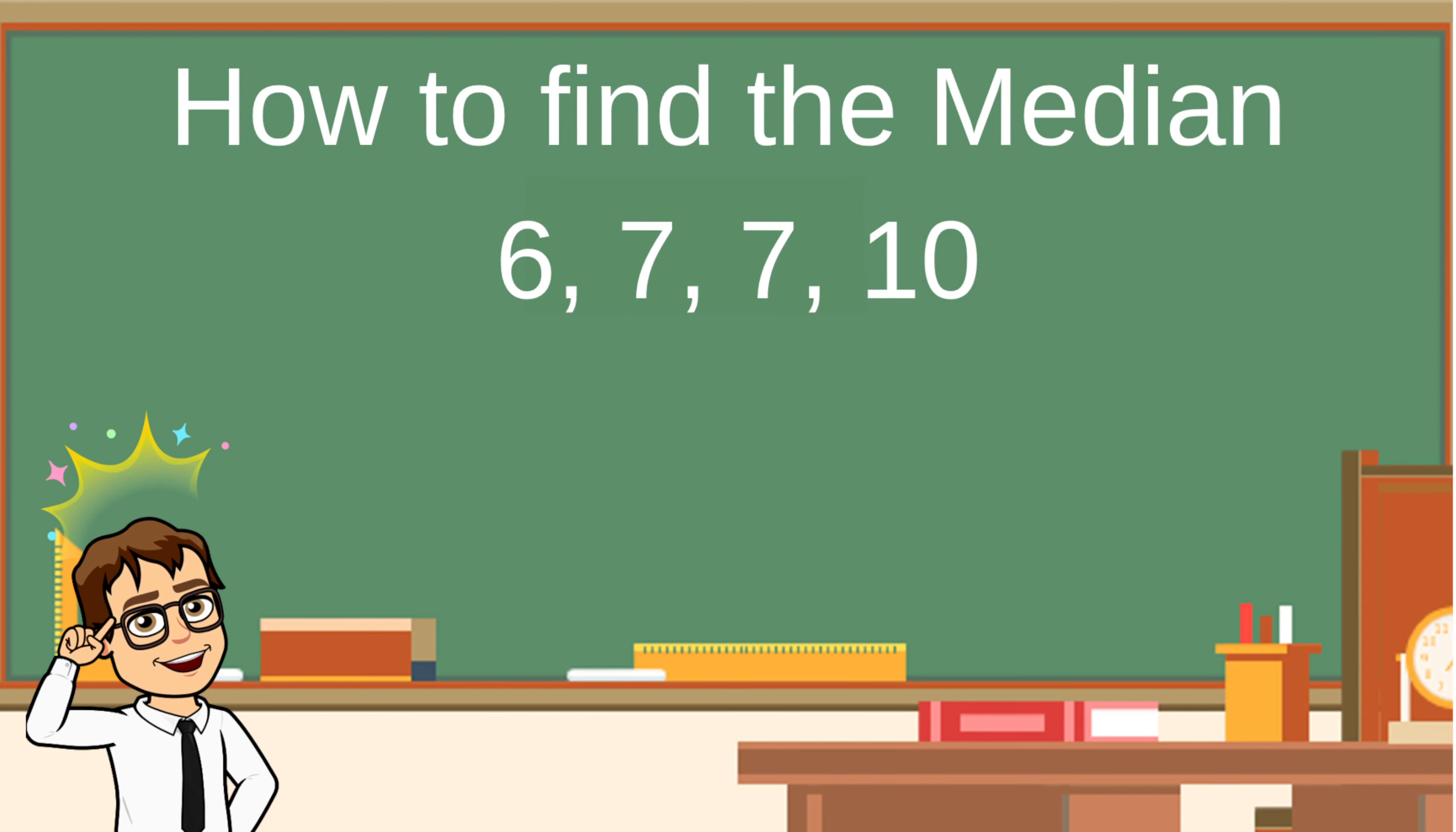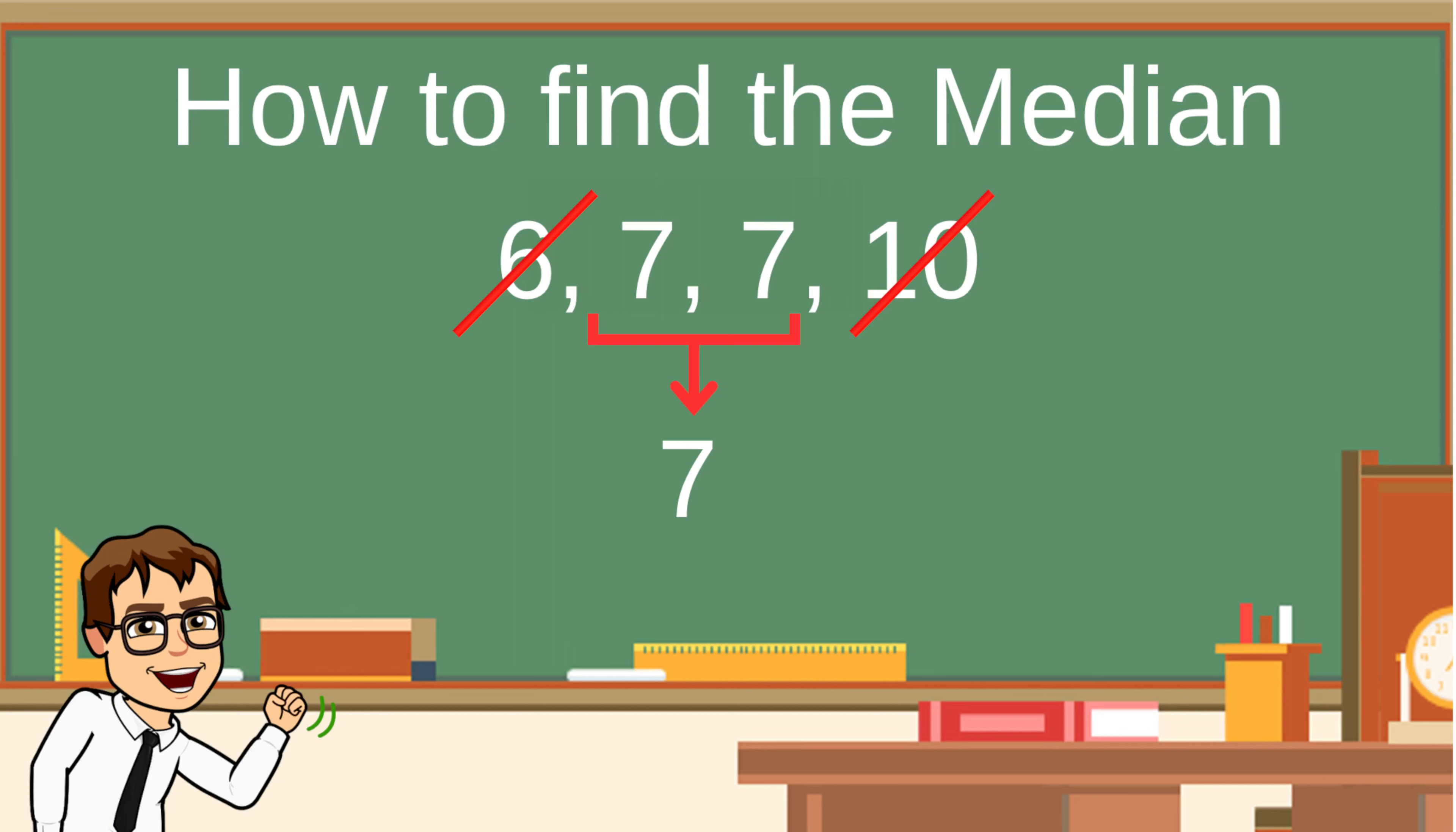Remember, if you ever find yourself in a situation where you've already cancelled out all the numbers on the left and the right of a set of numbers to get to the middle, and you find that you have two leftover numbers in the middle instead of one, just add these numbers together. Once you've added them together, just divide that number by two. And that will give you your median.